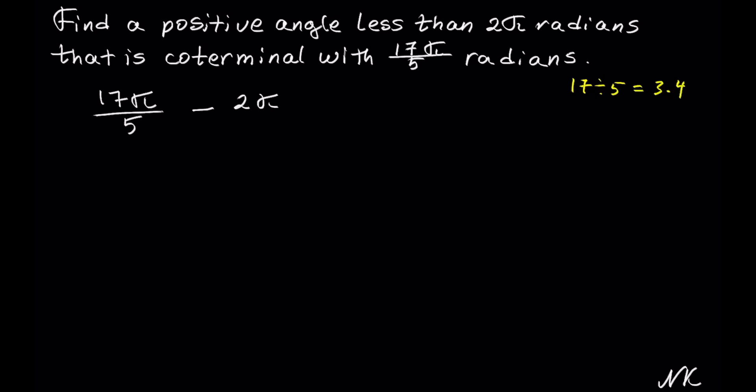Now we need to combine fractions. 2π is out of 1. We need a common denominator and the least common denominator is 5. So we need to multiply 1 by 5. Whatever we do to the denominator, let's do the same thing to the numerator. So 2 times 5. And we get 17π/5 minus 10π/5.